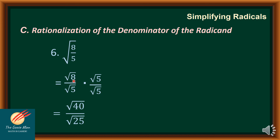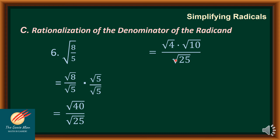So square root of 8 times square root of 5 equals square root of 40, divided by square root of 25. I can expand 40 as square root of 4 times square root of 10. The square root of 4 equals 2. Then I place the square root of 10 over the square root of 25, which equals 5. So the final answer is 2 times the square root of 10, all over 5.